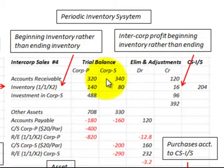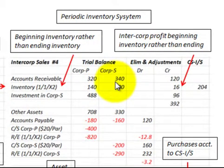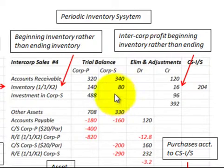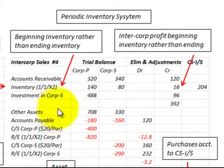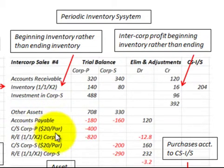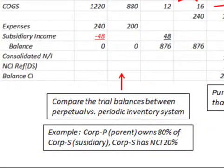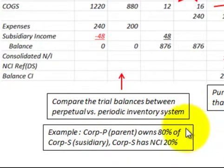Here we're going to be looking at a consolidation using the periodic inventory system. To understand how it works, we'll compare it to the perpetual inventory system, since the perpetual system is normally used and you're probably familiar with it. For our comparison purposes, we're going to compare the trial balances associated with the accounts between the perpetual and the periodic system. For our example, we're going to be looking at Corporation P, the parent, who owns 80% of Corporation S, the subsidiary.